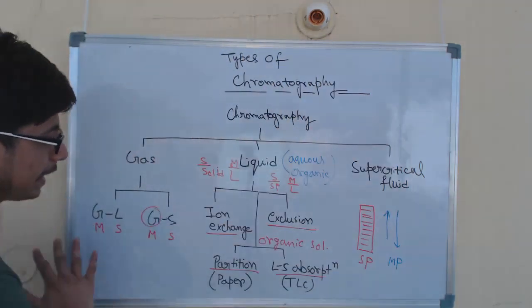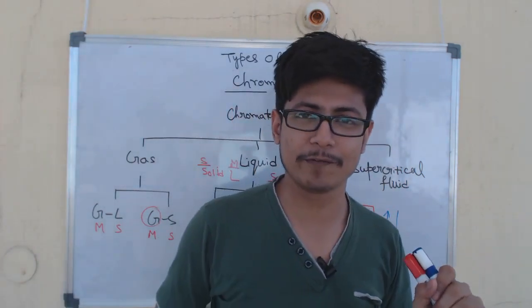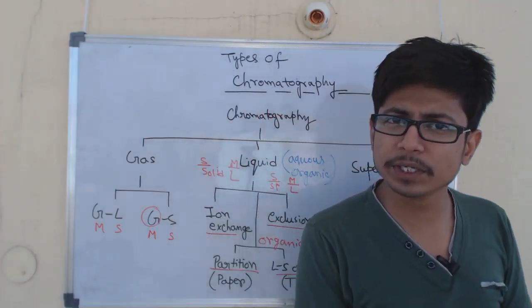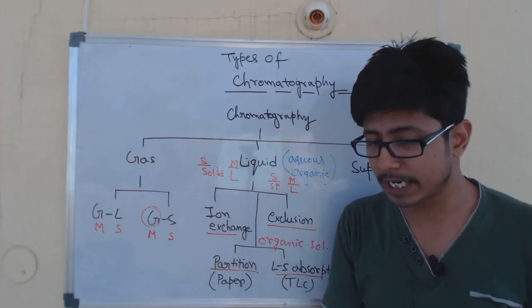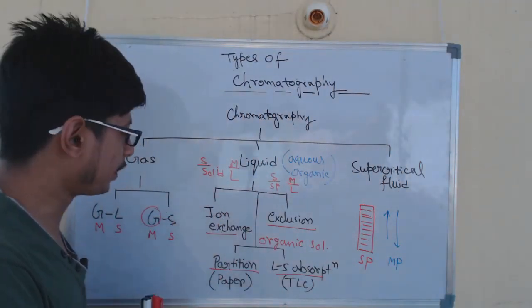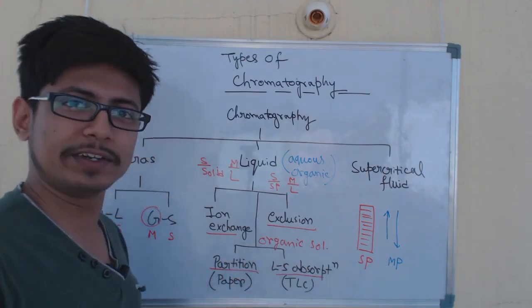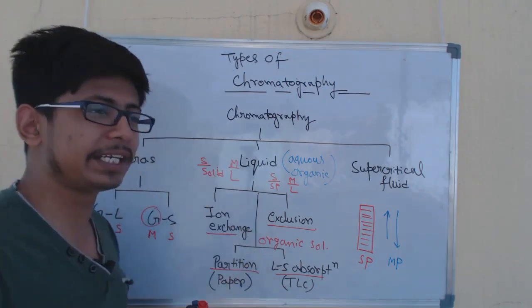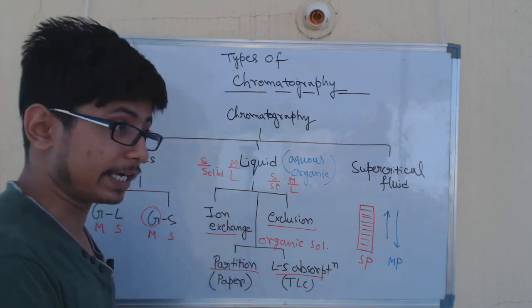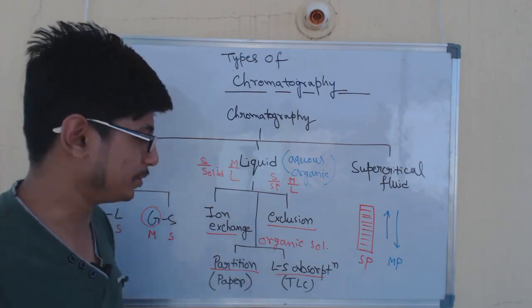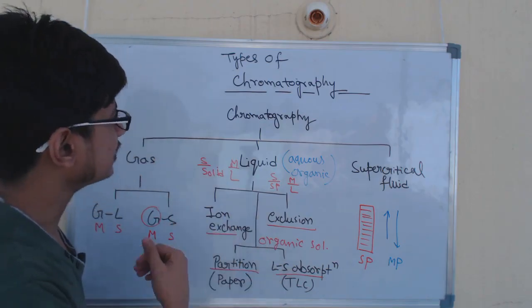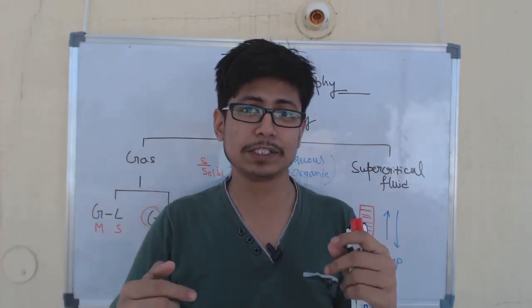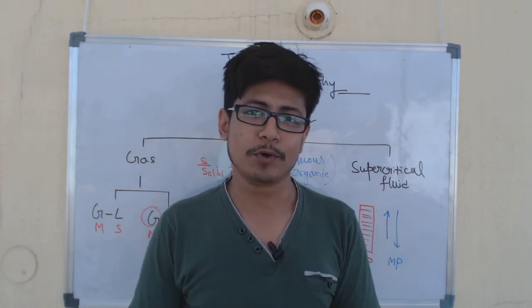In summary, these are all the different types of chromatography that we know of. For any type you should know what the elutant type is — whether it's gas or liquid. The elutant is normally the mobile phase, but in cases like partition chromatography and TLC, the dried liquid acts as elutant while the organic solvent serves as the mobile phase. I hope you liked the video — please hit the like button and subscribe to my channel for more videos. Thank you.